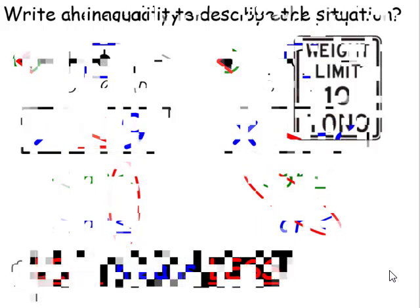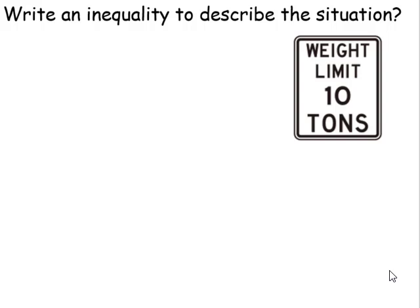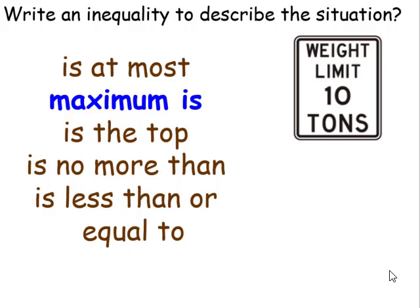Let's write an inequality to describe this situation: the weight limit is 10 tons. Words that represent this would be the most a truck could weigh, the maximum amount, its top amount — the weight cannot be more than. We're going to be using the less than or equal to symbol, so it's going to look like this: x is less than or equal to 10.